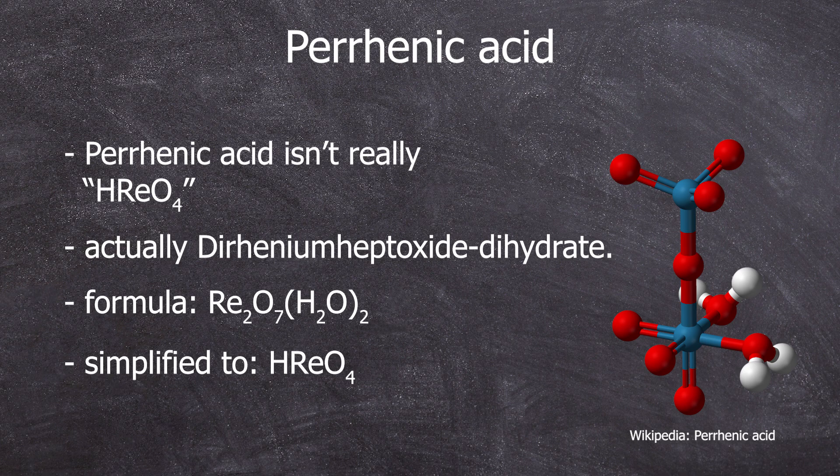But from now on, you know, this is a simplified representation. It should be noted that the pKa value of perrhenic acid is minus 1.25, classifying it as a strong acid. It is the strongest peroxy acid of the seventh group, stronger than permanganic and pertechnetic acid.